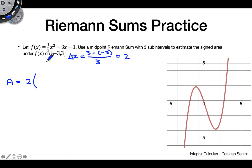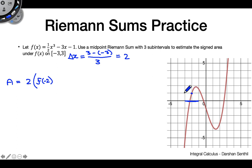The tricky thing about a midpoint sum is that you can't start at either endpoint — you have to start in the middle of your interval. So we don't start at −3 or −1; we start at −2. The midpoint sum means the middle of each rectangle is what we use to determine the height, i.e., where the rectangle touches the function.